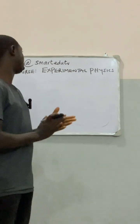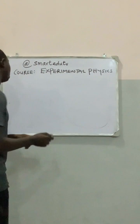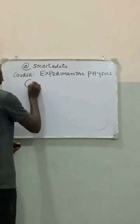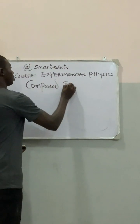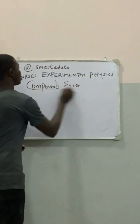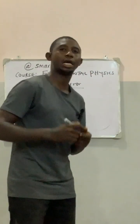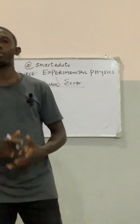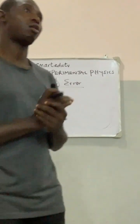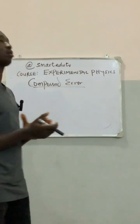The next thing we look at in our experimental physics is compound error. We want to see how we analyze error — how we treat each of the errors either in terms of addition or subtraction, or in terms of multiplication or division, or in terms of constant power.